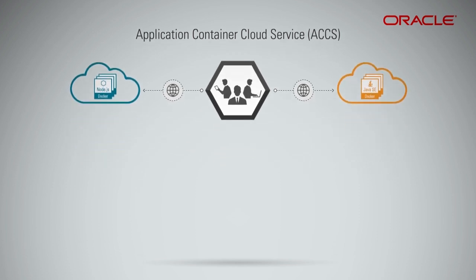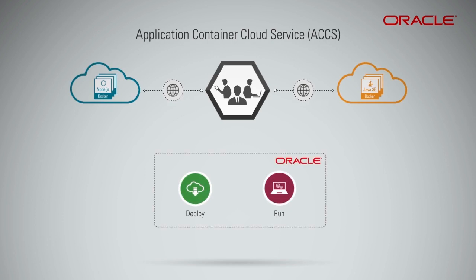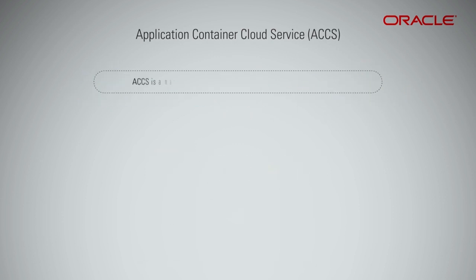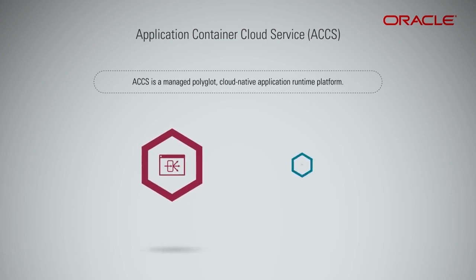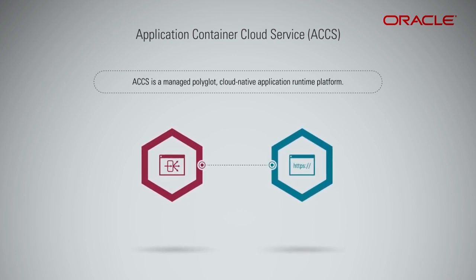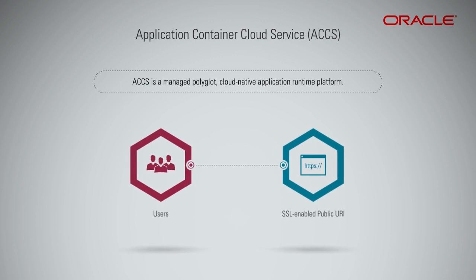This is essentially a true PaaS offering where deploying and running applications on the cloud is completely managed by Oracle. ACCS is a managed Polyglot Cloud Native Application Runtime Platform. When you bring your applications to ACCS, the Application Runtime Platform pairs this application container with a load balancer and an SSL-enabled public URI so that your users can easily access your application using the public URI over the Internet.